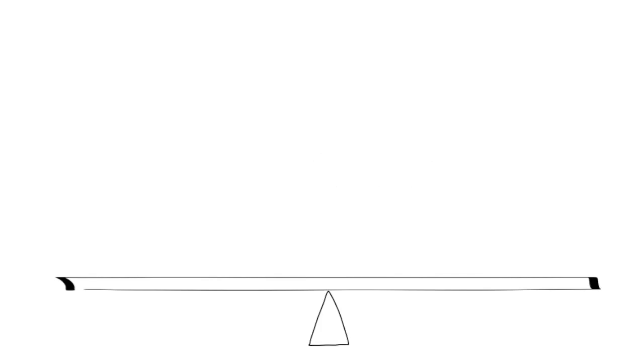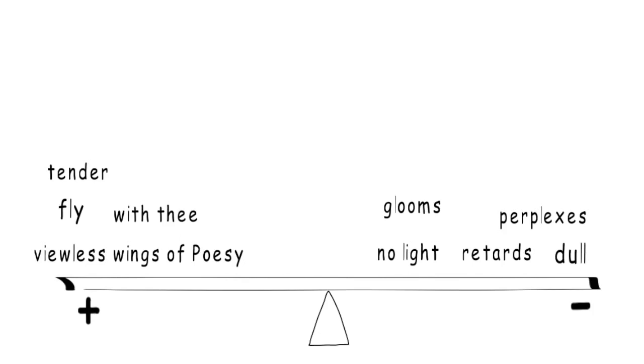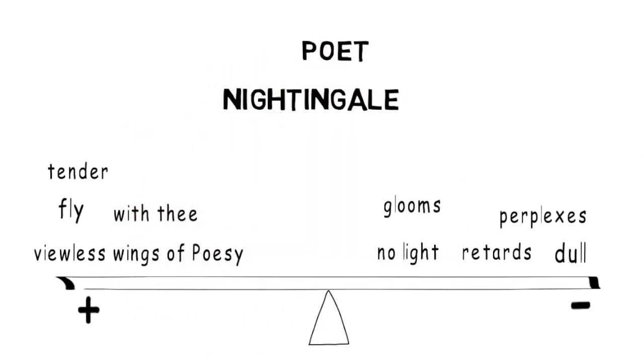In the fourth stanza, the poet now leaves behind his world of sorrow and misery and in his imagination, he enters the world of the Nightingale. And here, the pattern that we've seen so far of positive and negative begins to break down slightly. Away, away, for I will fly to thee, not charioted by Bacchus and his pards, but on the viewless wings of poesy, though the dull brain perplexes and retards. Already with thee, tender is the night and happily the queen moon is on her throne, clustered around by all her starry fays. But here there is no light, save what from heaven is with the breezes blown through verdurous glooms and winding mossy ways. In this stanza, the positive and negative aspects don't correspond quite so neatly with the poet and the Nightingale.